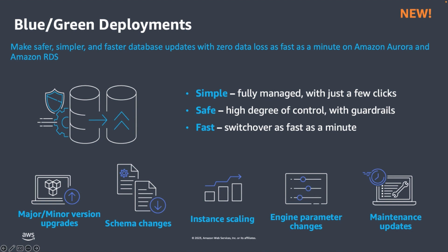Making updates like major version upgrades and schema modifications can be challenging — it requires significant time and resources to execute while minimizing downtime and performing extensive testing. In addition to the downtime, direct changes to your production environment can negatively impact database performance. We announced a feature for Amazon Aurora and RDS MySQL that lets you make updates to your database safely and with minimal downtime. The blue-green deployment is a fully managed feature for Aurora with MySQL compatibility, RDS for MySQL, and RDS for MariaDB. The switchover to production databases is as fast as a minute with zero data loss, compared to hours when using the in-place upgrade.